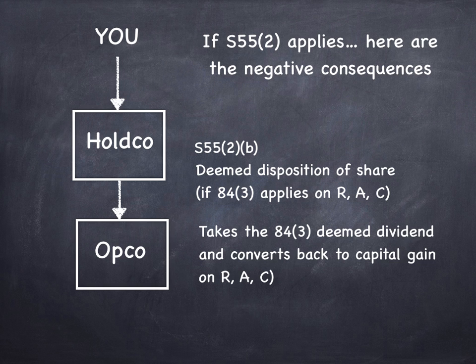So what happens here is they interpose Section 55.2(b) into the middle, and it applies to deem the second situation — the $900 dividend in the HoldCo/OpCo structure — back into capital property by the amount that the acquisition, redemption, or cancellation price exceeds the PUC. 55.2(b) says if there was a deemed disposition of shares — deemed dispositions come from 84.3 transactions — when shares were acquired or canceled at a price that exceeded the PUC, it takes the 84.3 deemed dividend and converts it back into a capital gain. That's what 55.2(b) does.